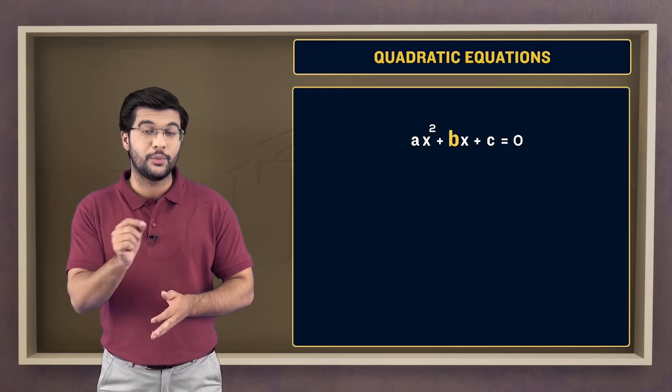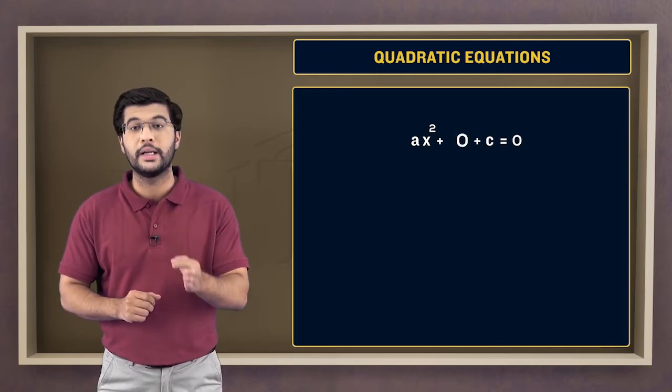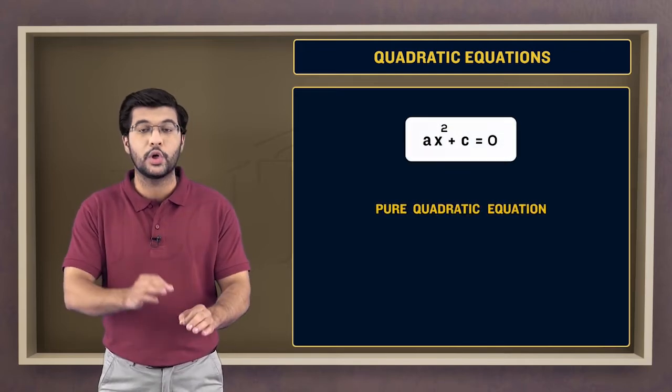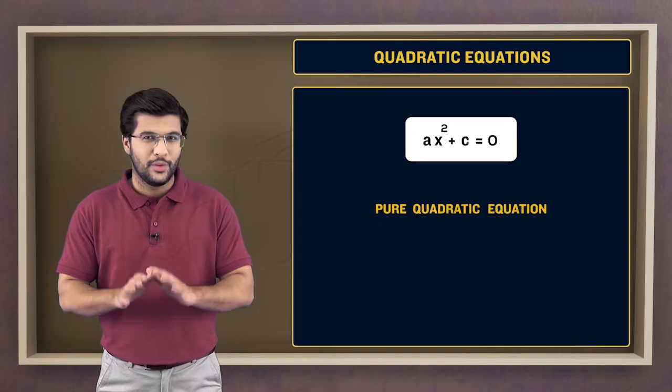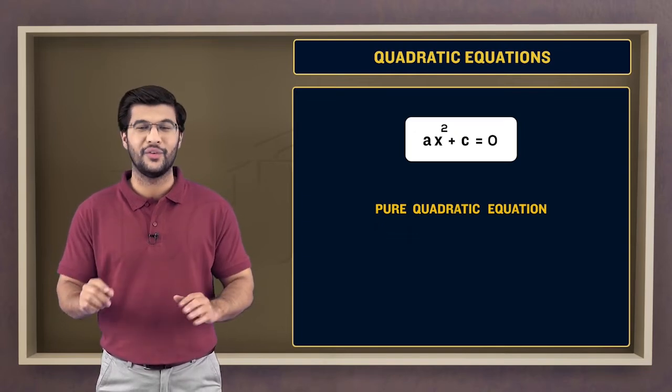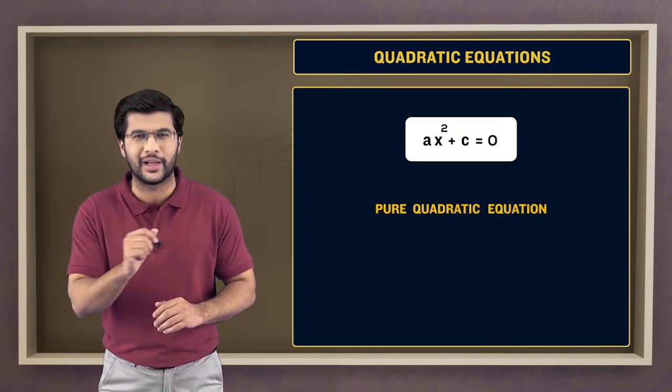In the case of b equal to 0, the quadratic equation is called a pure quadratic equation. Whoa, you are on a roll here. You have covered these terminologies pretty quickly.